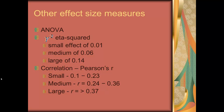There are other effect size measures you may want to know about. In analysis of variance, there is eta squared. The rubrics for eta squared are: small is about 0.01, medium is 0.06, and large is 0.14. In correlation, Pearson's R is actually the measure of effect size — it's dimensionless. Cohen says a small R is between 0.1 and 0.23, a medium is between 0.24 and 0.36, and a large effect size in psychology is above 0.37.